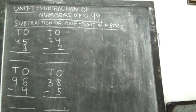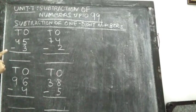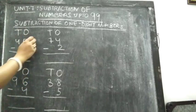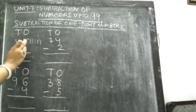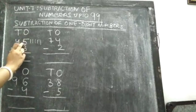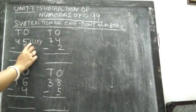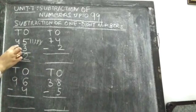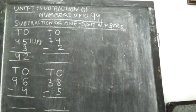Now see the exercise in page 99. First one: 45 minus 3. We have to subtract the ones column first. So 5 minus 3 — draw 5 lines: 1, 2, 3, 4, 5. Then from these 5 lines, we have to cut down 3 lines: 1, 2, 3. So how many are left? 2. So write 2 here. In the 10s column, nothing to subtract, so simply write this number: 4.